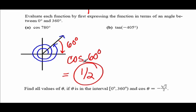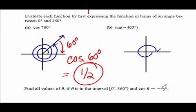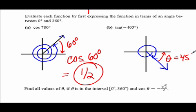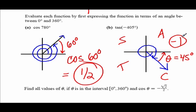For part b, tangent of negative 405 degrees — going 405 degrees in the clockwise direction. That's 360 plus 45 more, stopping in quadrant four with a 45 degree reference angle. Tangent is negative in quadrant four, and tangent of 45 is 1. So tangent of negative 405 degrees equals negative 1.